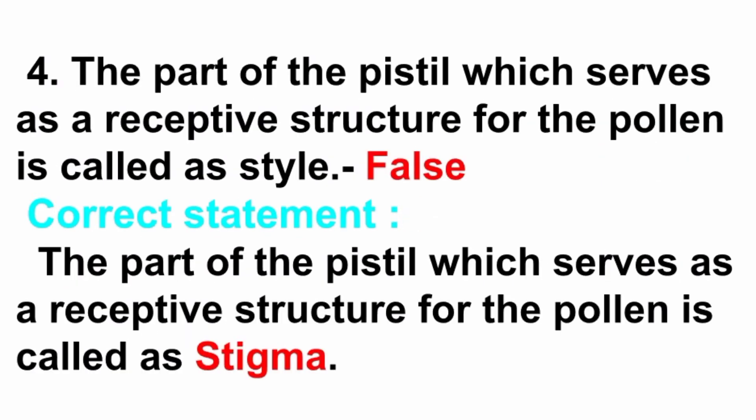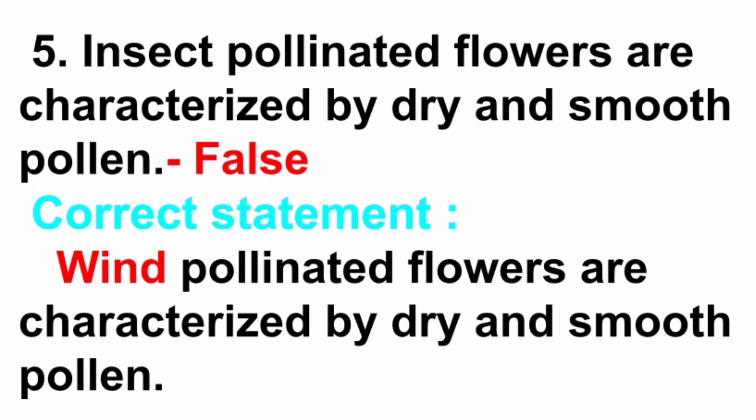Fourth: the part of the pistil which serves as a receptive structure for the pollen is called style — answer is false. Correct statement: the part of the pistil which serves as a receptive structure for the pollen is called stigma. Fifth: insect-pollinated flowers are characterized by dry and smooth pollen — answer is false. Correct statement: wind-pollinated flowers are characterized by dry and smooth pollen.